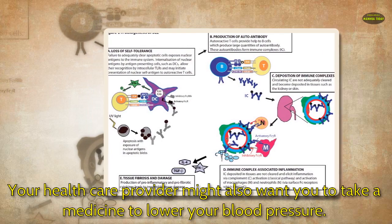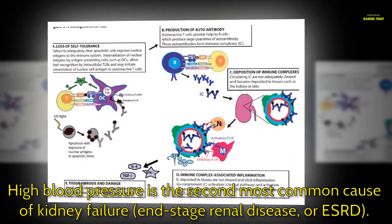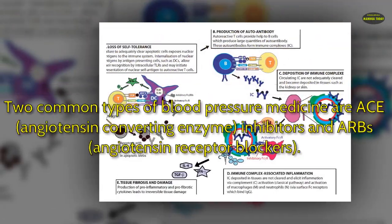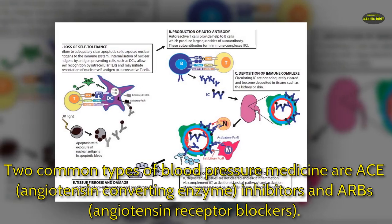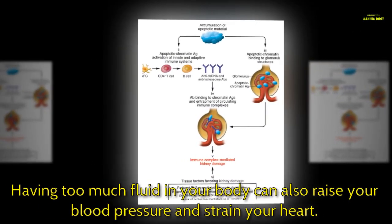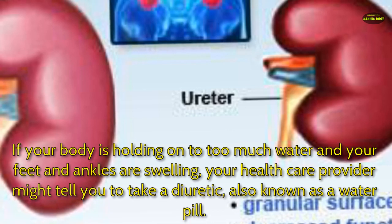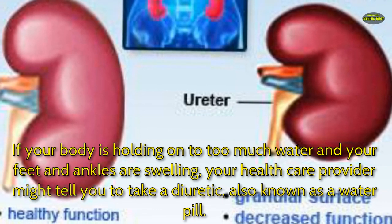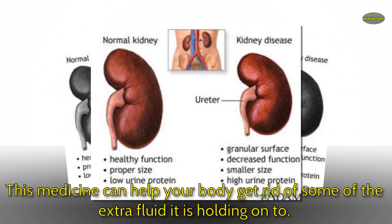Your health care provider might also want you to take a medicine to lower your blood pressure. High blood pressure is the second most common cause of kidney failure and end-stage renal disease, or ESRD. Two common types of blood pressure medicine are ACE inhibitors and ARBs. Having too much fluid in your body can also raise your blood pressure, so if your feet and ankles are swelling, your provider might tell you to take a diuretic, also known as a water pill, to help your body get rid of extra fluid.